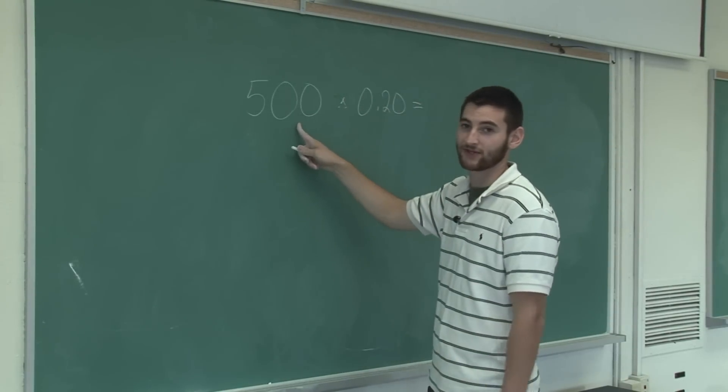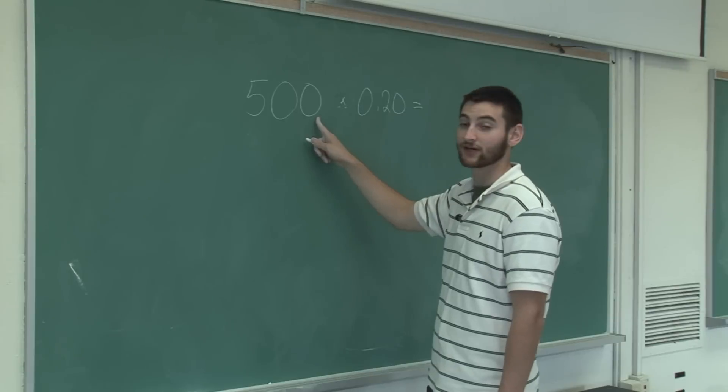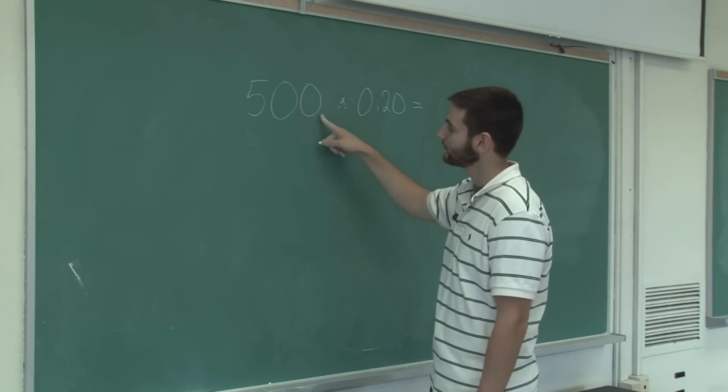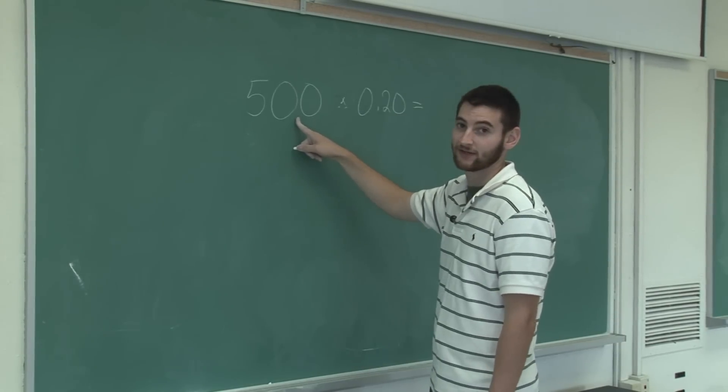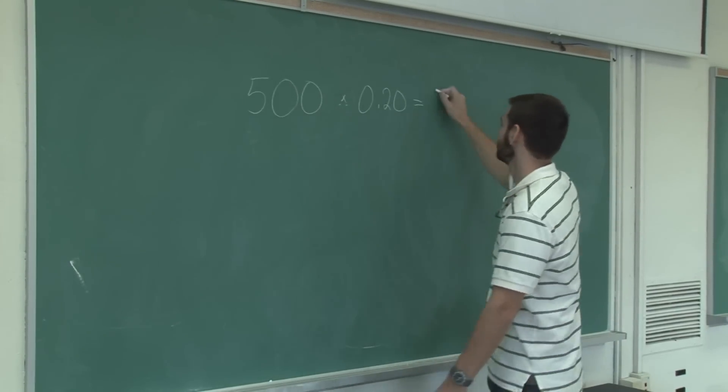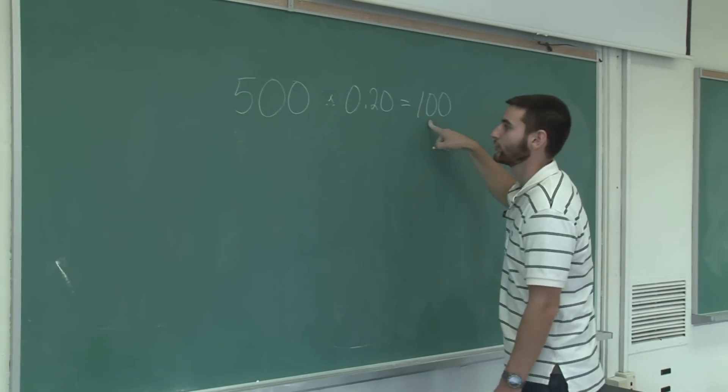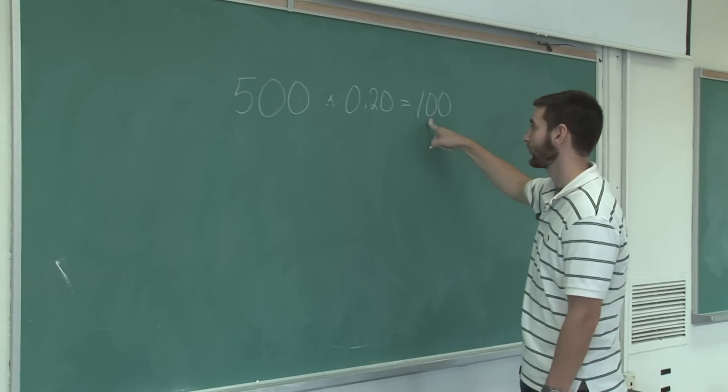A quick and easy way to find out what 20% of something is is to find out what 10% of it is and multiply by 2. 10% would be $50 times 2 is $100. So a 20% discount on $500 is $100.